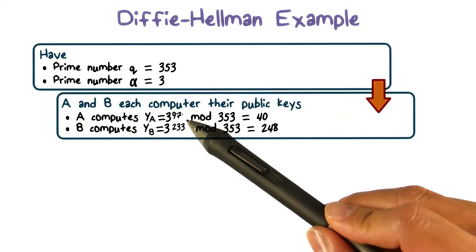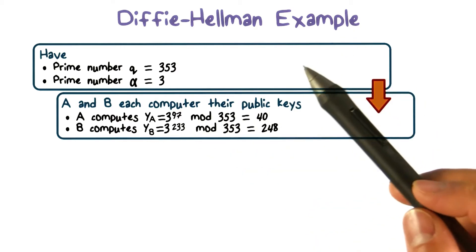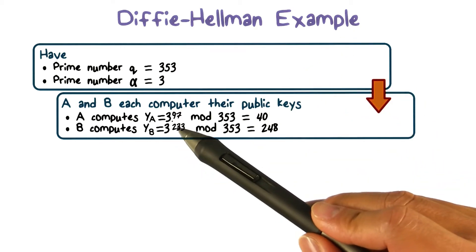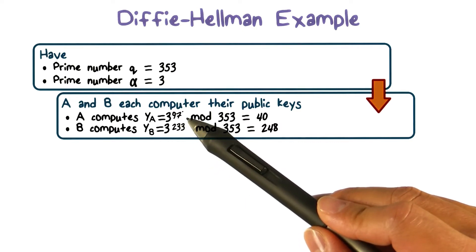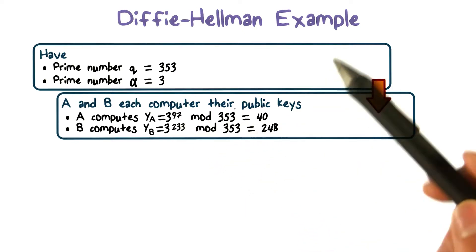User A selects a random number, which is a secret to herself, and this value is 97. So she computes yA, which is 3 raised to the power of 97 mod 353, and the result is 40.